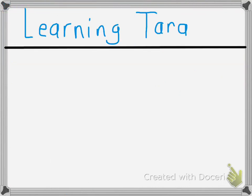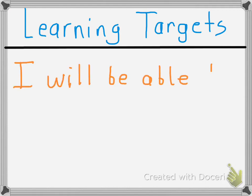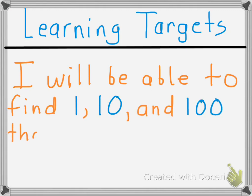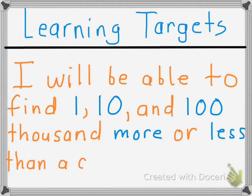Great job! That's really important to be able to distinguish between number and digit — let's practice that in the future. Let's review our learning targets: I will be able to find one, ten, and a hundred thousand more or less than a given number. We will continue to work on this learning target as we continue through our next examples. Thanks for listening.